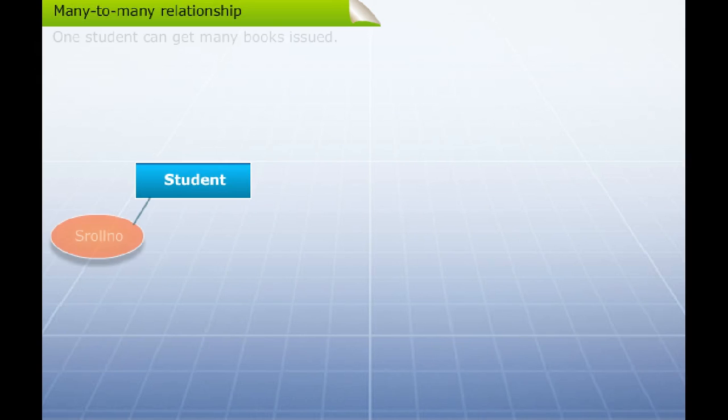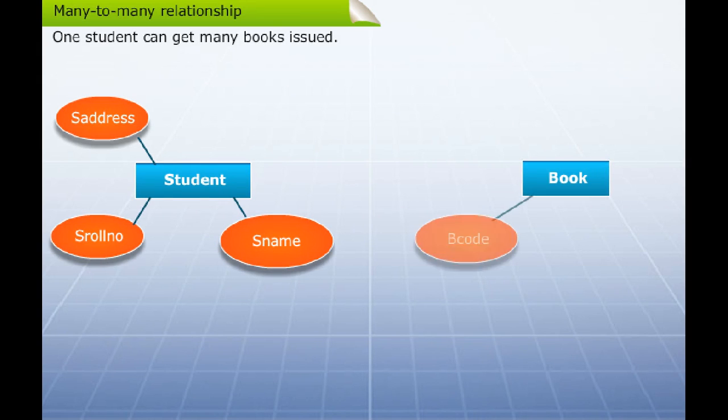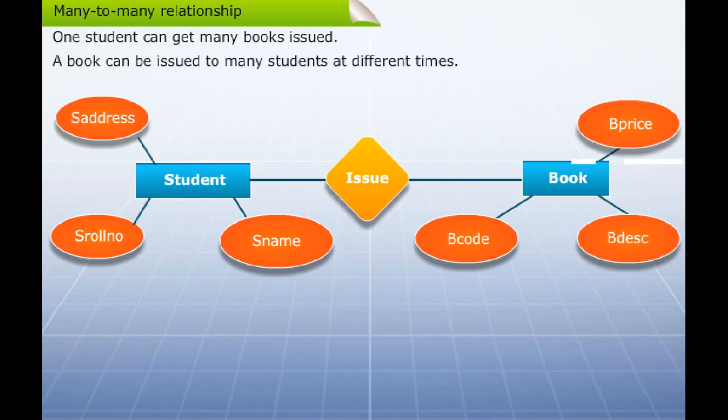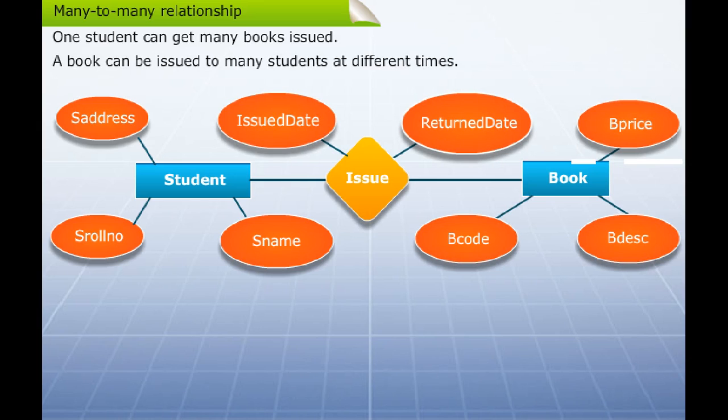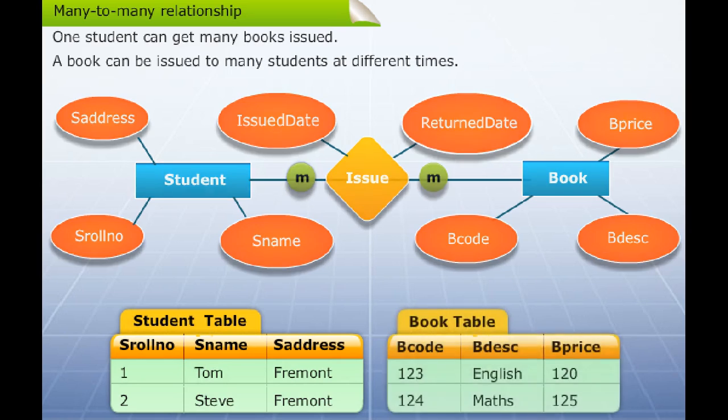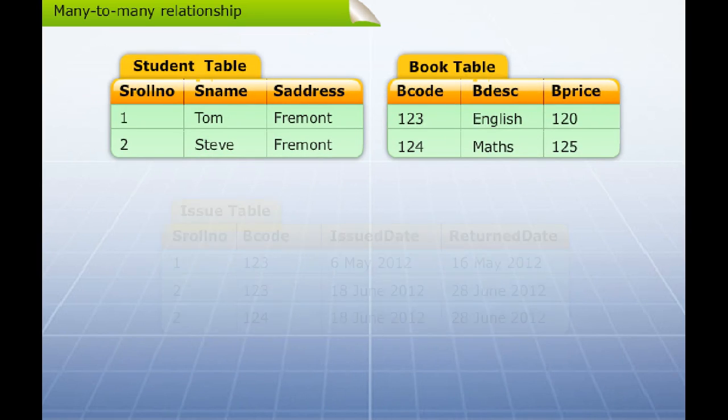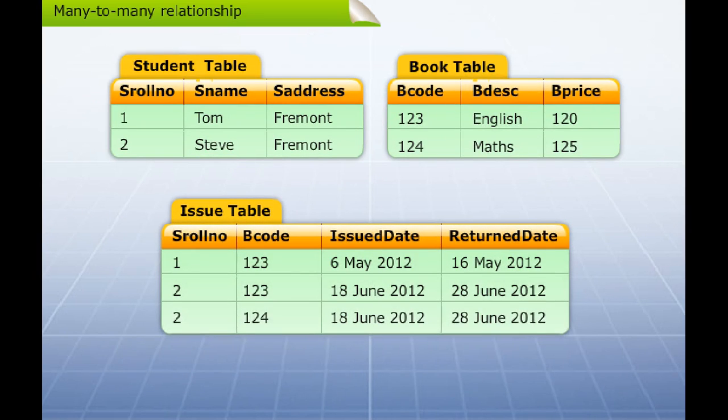One student can get many books issued and a book can be issued to many students at different times. The many-to-many relationship between the student and book tables can be mapped using three different tables. The issue table is used to join the two tables named student and book.